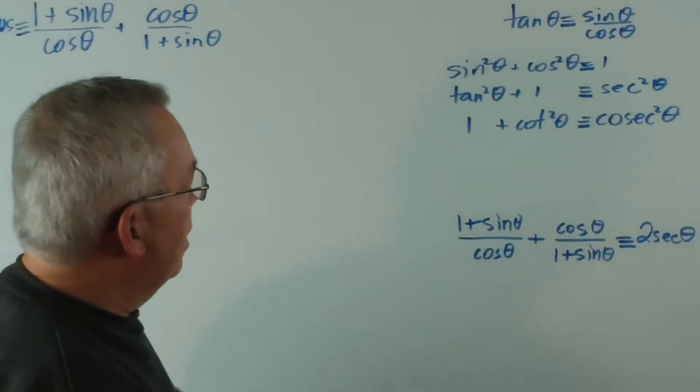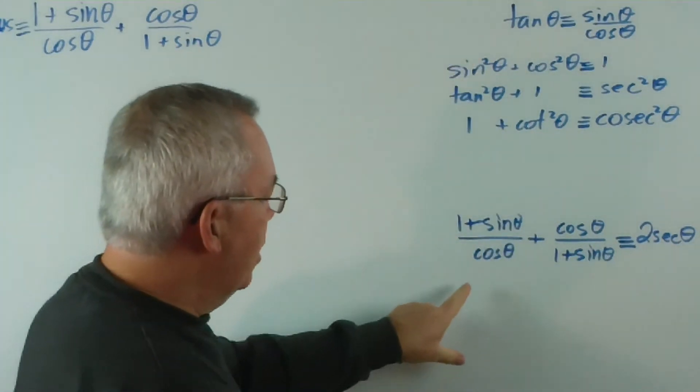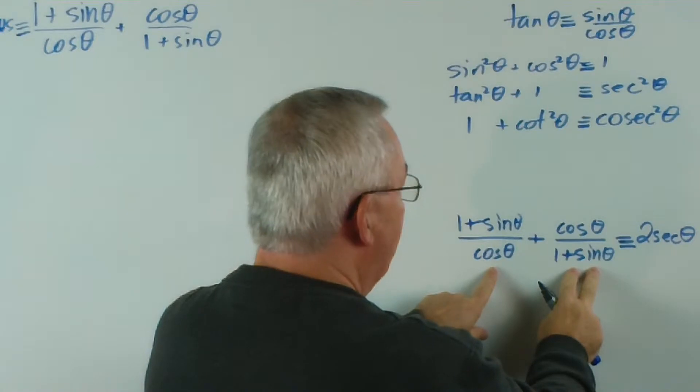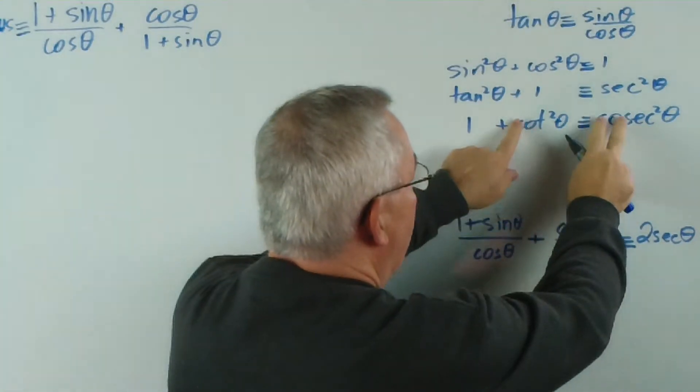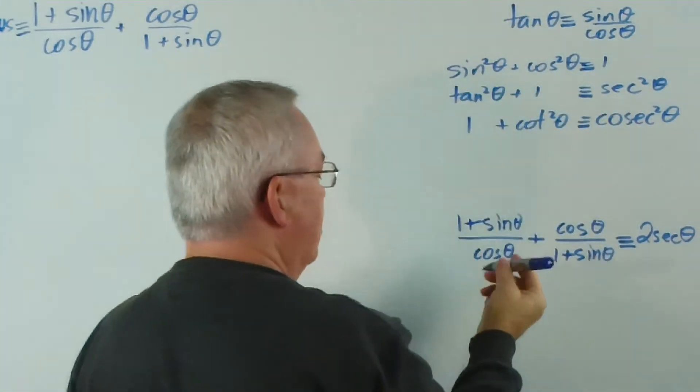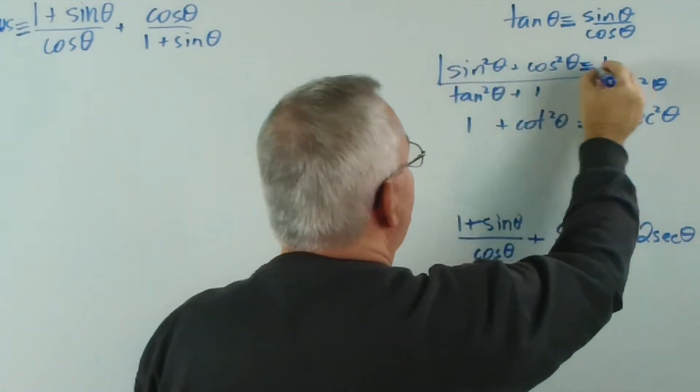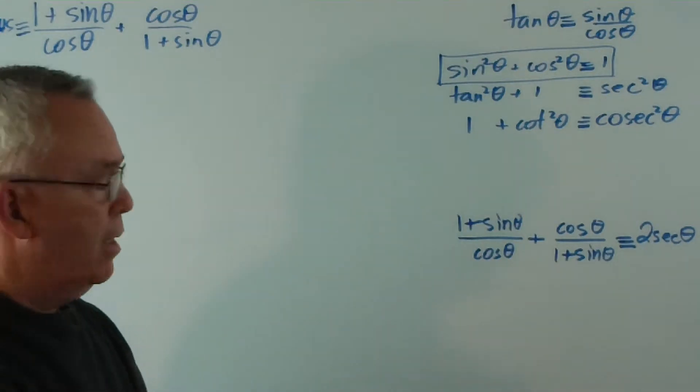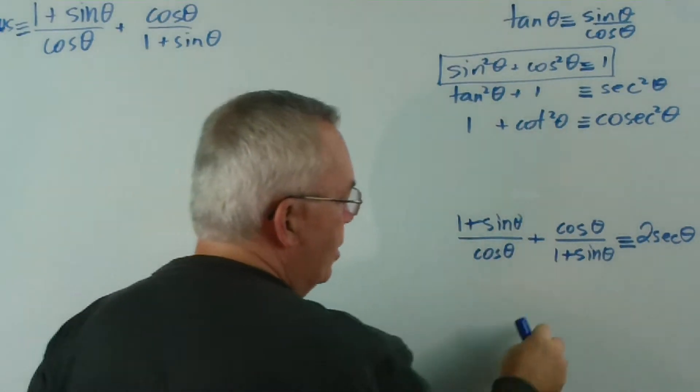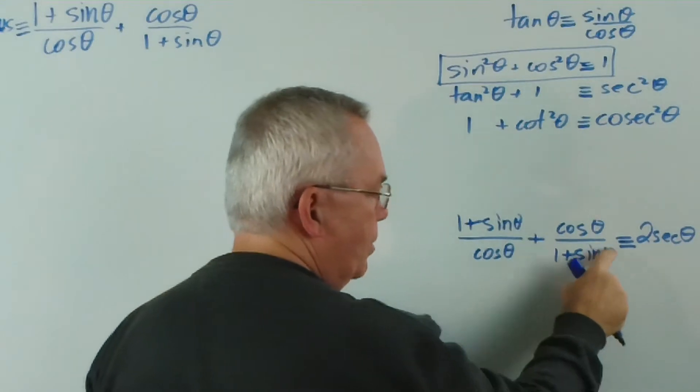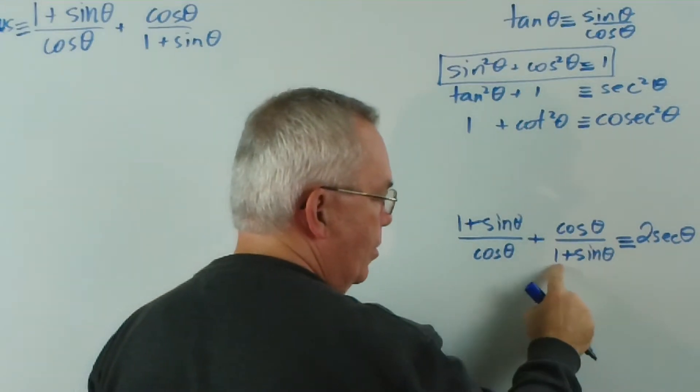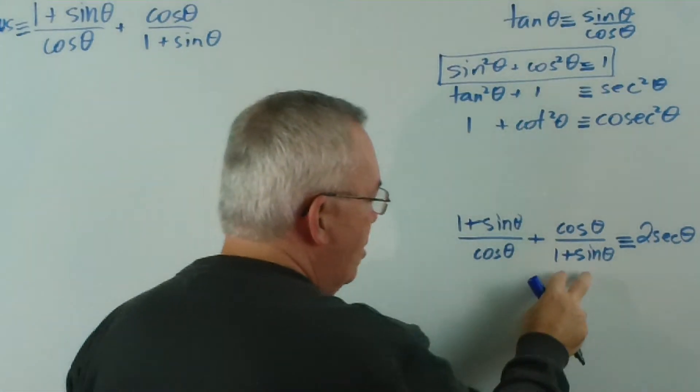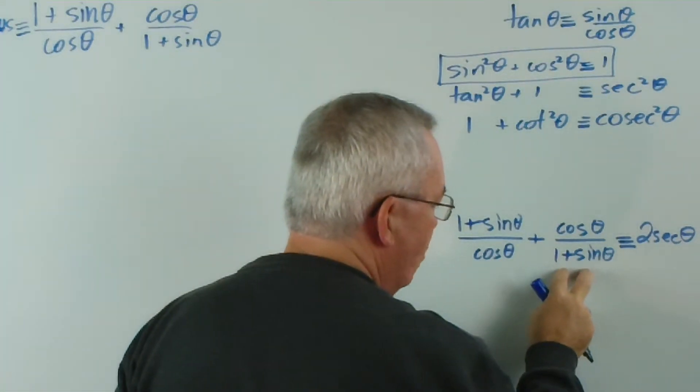Now we are talking about these identities. Is there an identity that could possibly match these? Well, looking up here, certainly not this or this, but this one. We could conceivably use that. And I also notice this is a rather complicated denominator. It's made up of two terms, 1 and sine theta. How can we combine them into one?